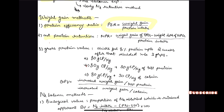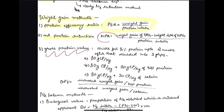Next is Net Protein Retention (NPR). You give a test protein diet to one animal and a non-protein diet to another animal of the same species, sex, age, and environment. The difference between the weight gain on the test protein diet and the weight loss on the non-protein diet, divided by protein intake, gives Net Protein Retention (NPR).